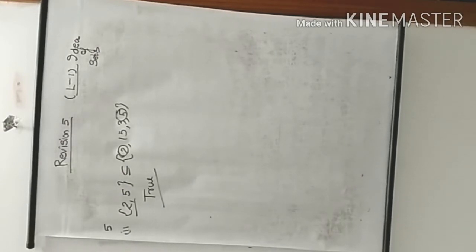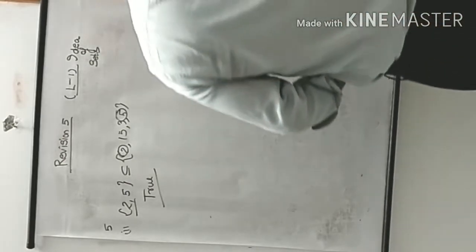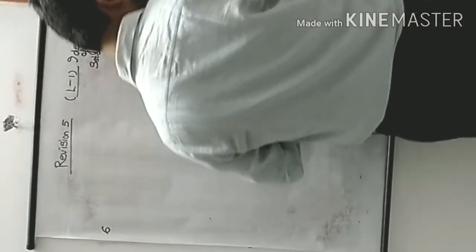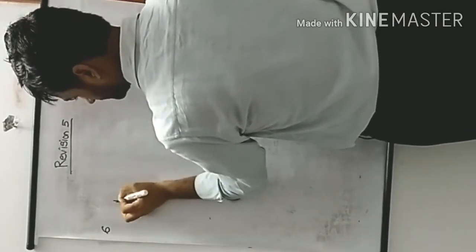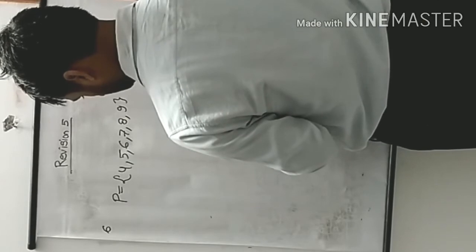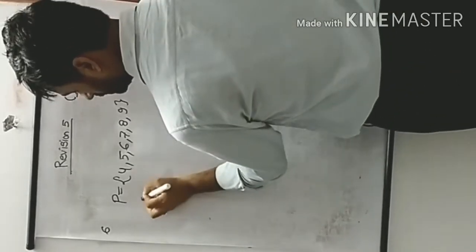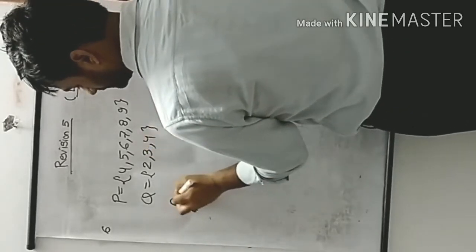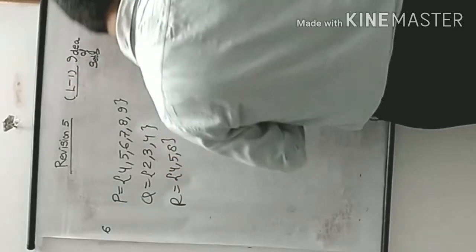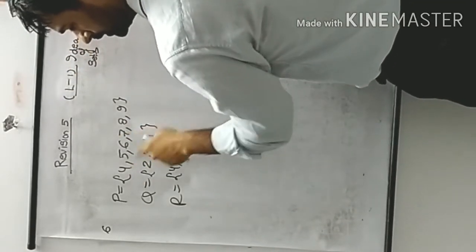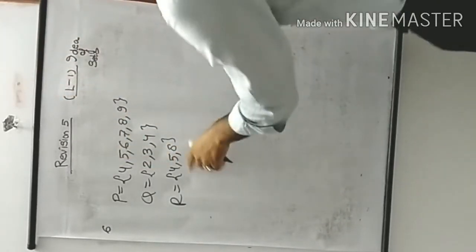Question 6: P = {4,5,6,7,8,9}, Q = {2,3,4}, R = {4,5,8}. Checking if R ⊂ P: 4 is in P, 5 is in P, 8 is in P — yes, all elements of R are in P. So R is a subset of P — this is true.